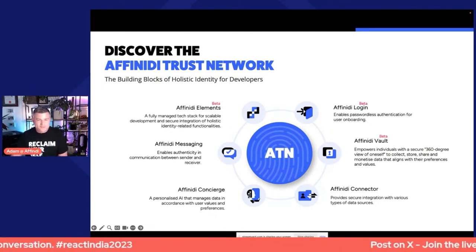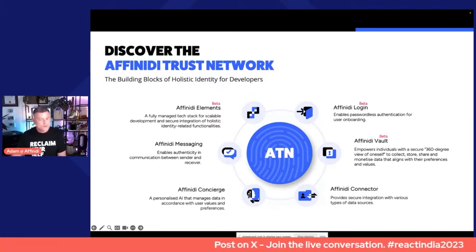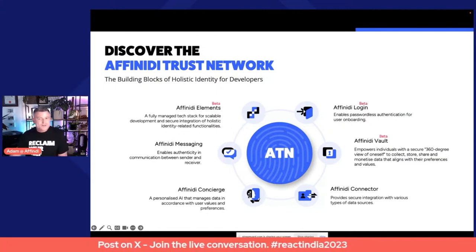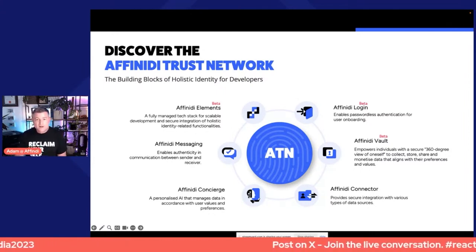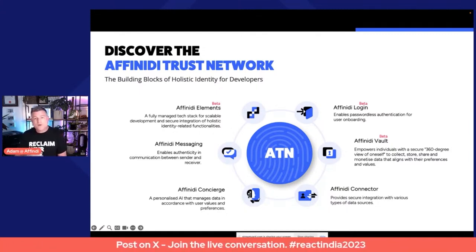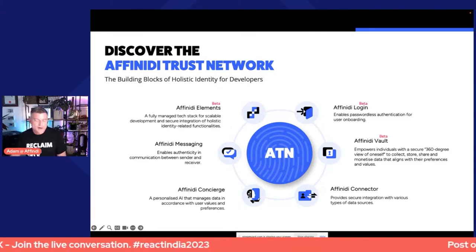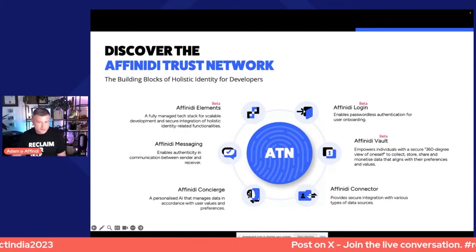It all starts with the Affinity Vault, which is now in beta — we've just gone into beta as of late last week. Consumers can install the Affinity Vault, which runs at the edge in the browser, and then use the vault to collect zero-party data all in one place that the consumer controls. Developers like you can then request access to the vault in such a way that puts the consumer in control of granting consent, making sure that they are always remaining in control of their data.